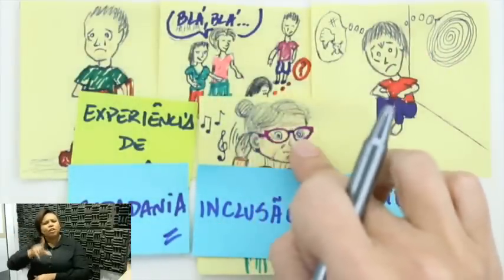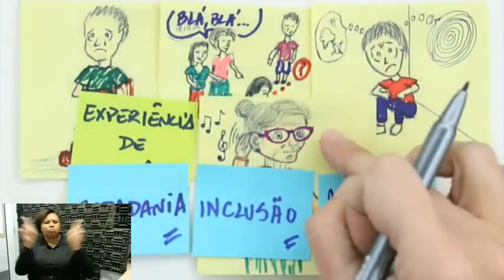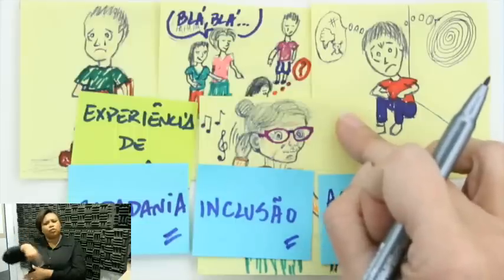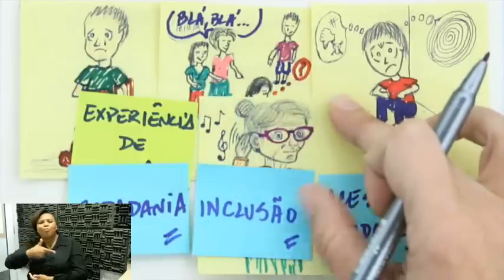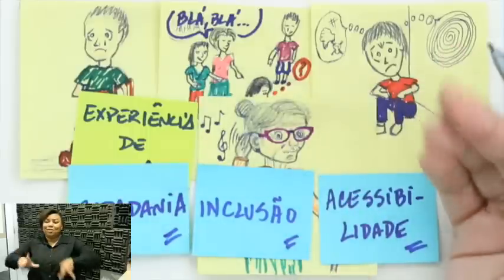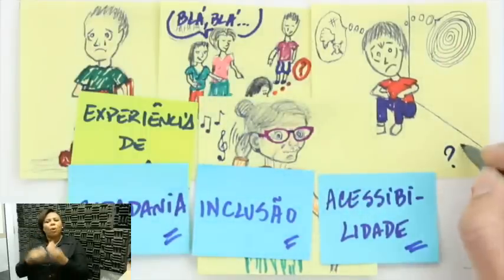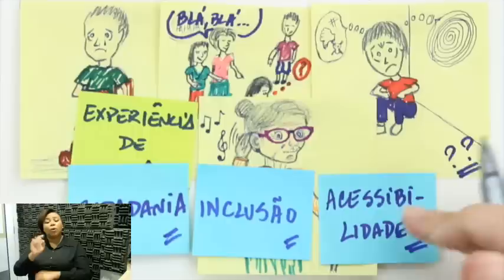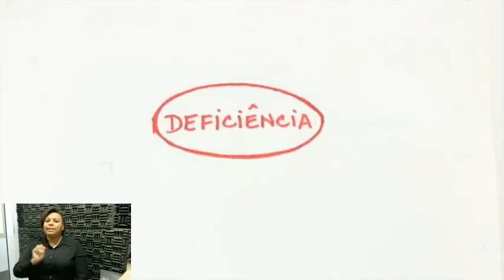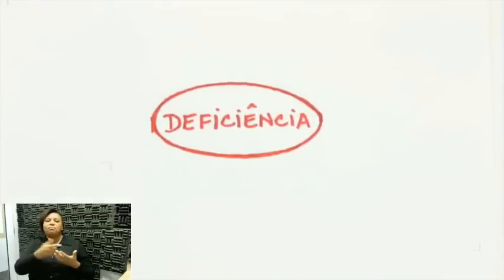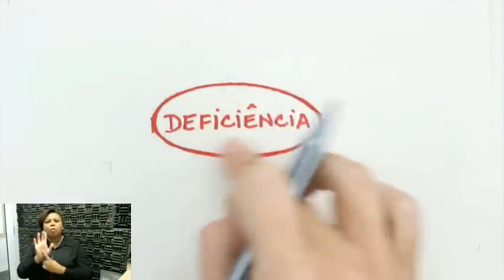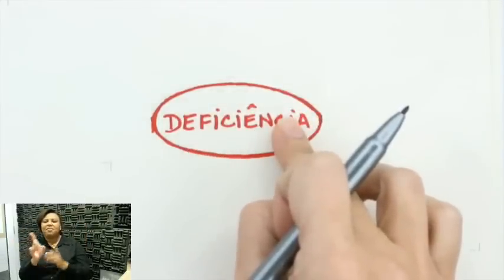Vocês conviveram com pessoas com deficiência? Ou convivem diariamente com algum idoso na casa de vocês? O que a gente pode fazer? O que o Estado pode fazer? Vamos ver um pouquinho o que afinal de contas é deficiência. Estou mostrando aqui o terceiro quadro dessa aula, com a palavra deficiência escrita em vermelho, circulada bem no meio da folha.